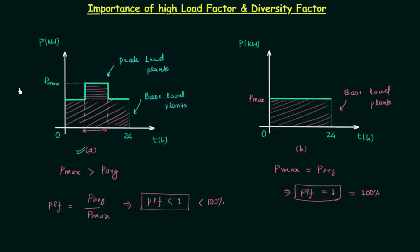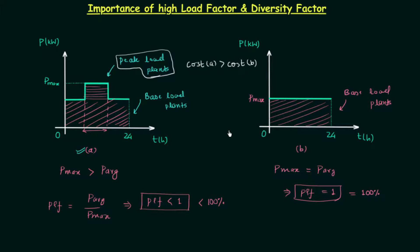In terms of cost, load curve A will have higher cost compared to load curve B because we need to install peak load plants and large infrastructure, making the installation cost very large. So if we have a load curve like B it will be much easier to operate and the cost will be lower. We always try to convert load curve A to load curve B, and the different methods to do this will be explained in the next presentation.